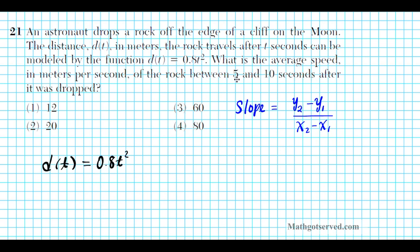Your first t is x1 and your second t is x2. Think of x1 as the first t, which is 5, and x2 as your second t, which is 10. To find your y's — your outputs — you plug your inputs into the function. So y1 is what you get when you input x1 into the function: y1 is d of 5.